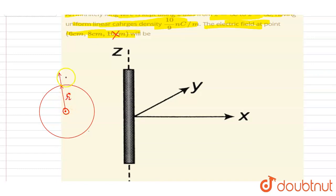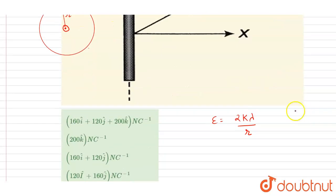If I talk about the direction, as I have already told, the r vector will be radially outward taking z-axis as the center. So basically, I will write down the direction of this E vector.